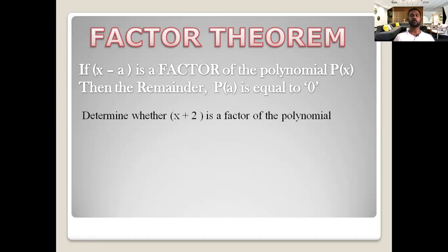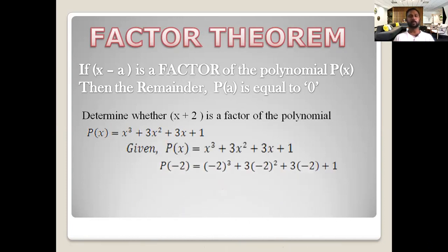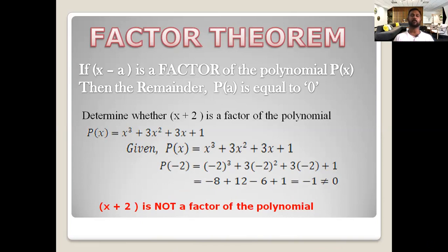Determine whether x plus 2 is a factor of the polynomial p(x) equal to x³ plus 3x² plus 3x plus 1. To verify, find the remainder p(minus 2), since x plus 2 equal to 0 gives x equal to minus 2. p(minus 2) equals (minus 2)³ plus 3(minus 2)² plus 3(minus 2) plus 1, which equals minus 8 plus 12 minus 6 plus 1, equal to minus 1. Since the remainder is not equal to 0, x plus 2 is not a factor of the polynomial.